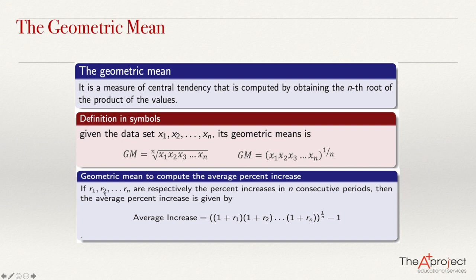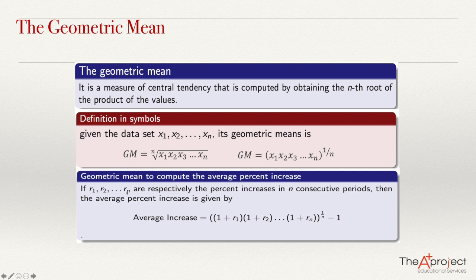If you have r1, r2, until rn as respectively the percent increases in n consecutive periods, then the average percent increase is given by this formula. You take all these percent increases, add one to each of them, then get the geometric mean of that and subtract 1. Getting the geometric mean is just multiplying all of these numbers and raising to the power 1 over n, where n is the number of periods.